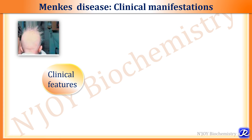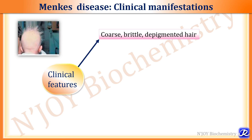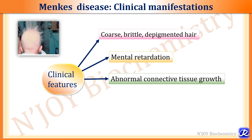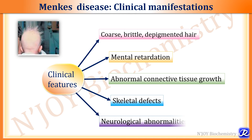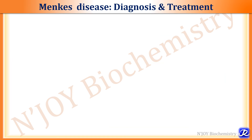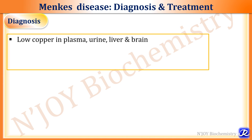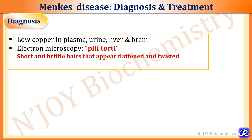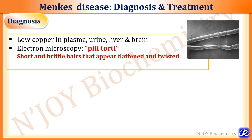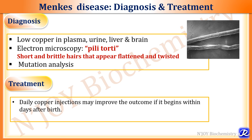Copper is an important constituent of enzymes like dopamine beta-hydroxylase, lysyl oxidase, and tyrosinase. Dopamine beta-hydroxylase is responsible for catecholamine synthesis, lysyl oxidase has a role in collagen formation, and tyrosinase has a role in melanin production. Due to lack of copper, deficiency of these enzymes results in various manifestations. Clinical features of Menkes disease include coarse, brittle, depigmented hair, mental retardation, abnormal connective tissue growth, skeletal defects, and neurological abnormalities. Diagnosis is based on low copper levels in plasma, urine, liver, and brain; electron microscopy shows pili torti — short, brittle hairs that appear flattened and twisted. Mutation analysis can confirm the diagnosis. Treatment includes daily copper injections, which may improve outcome if begun within days after birth; other treatment is symptomatic and supportive.